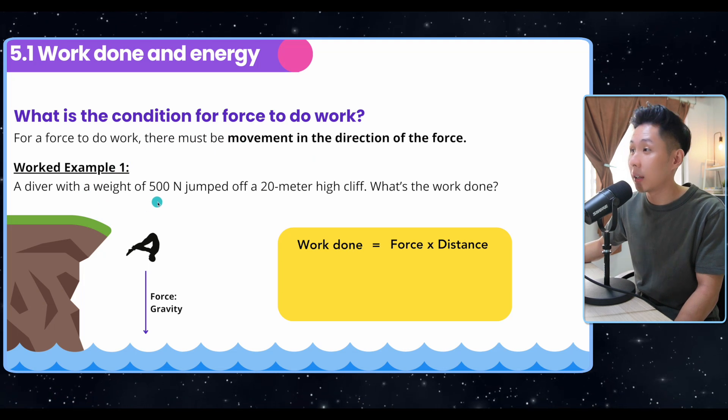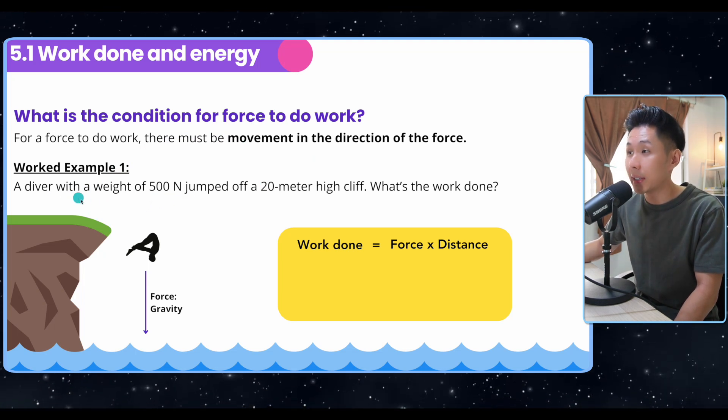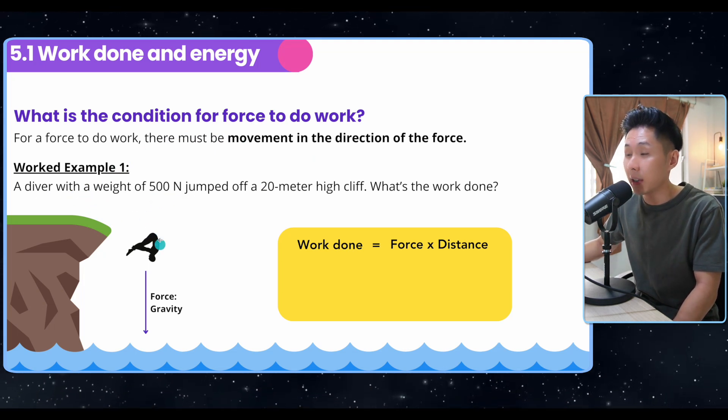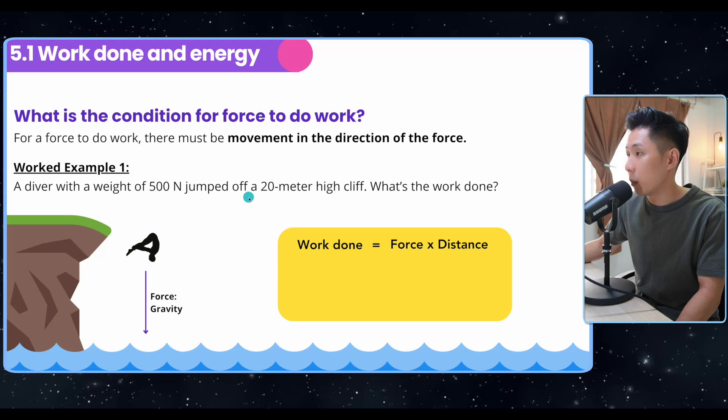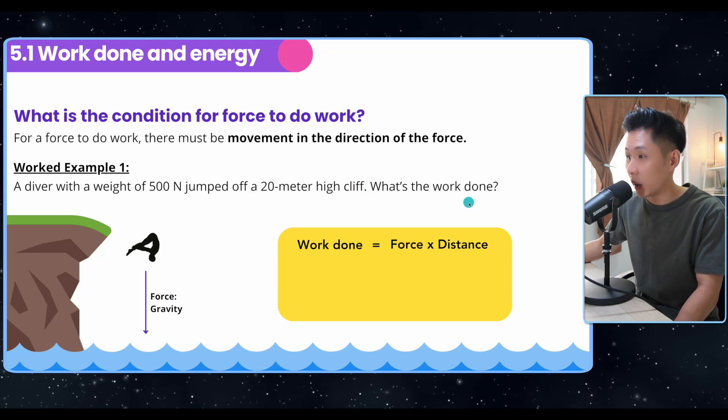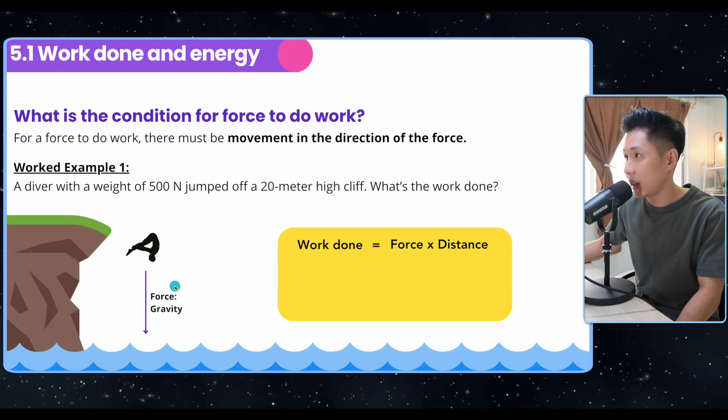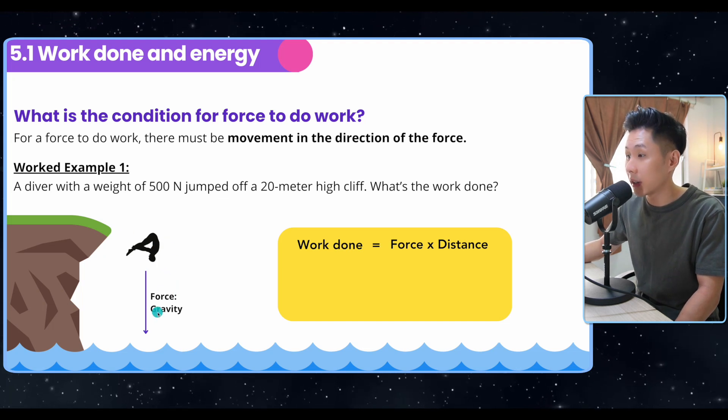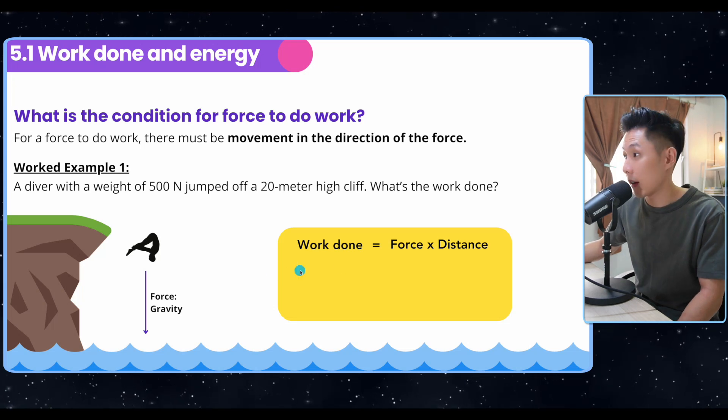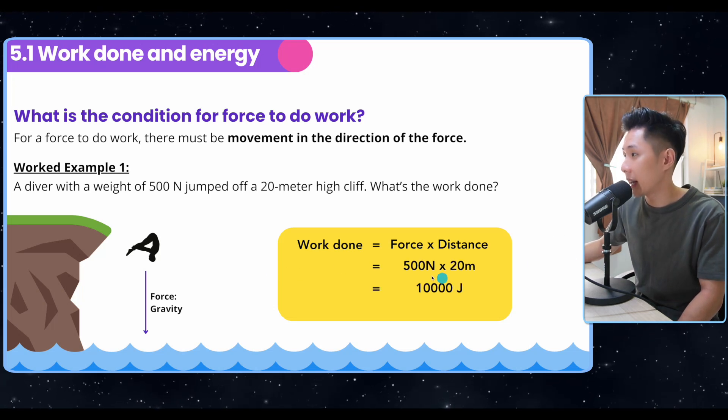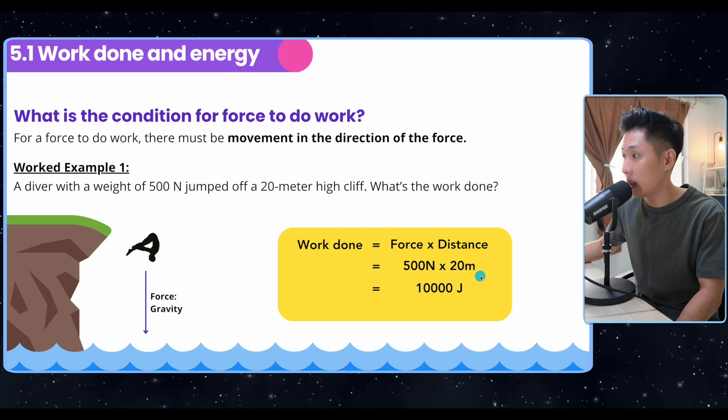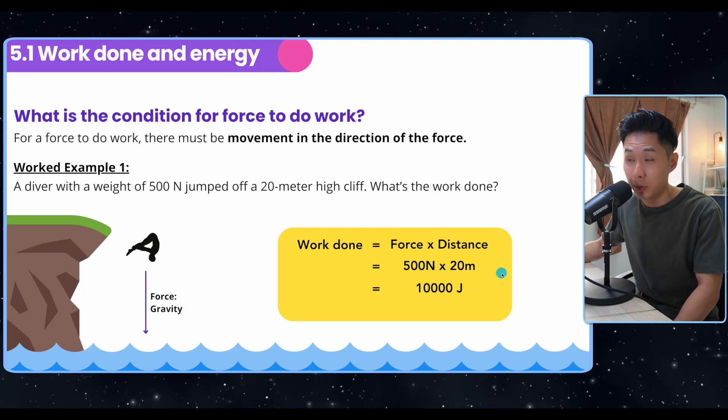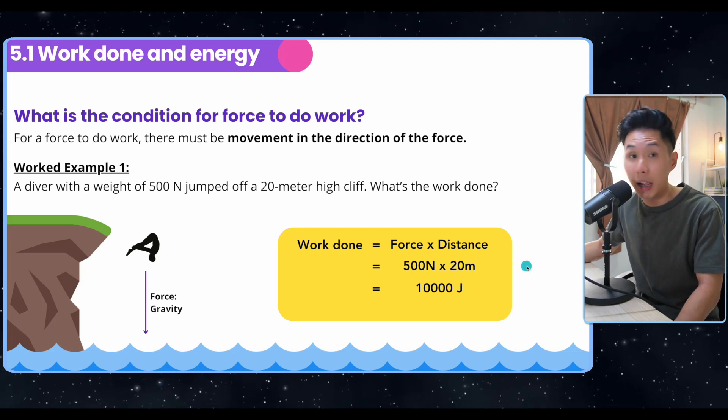Say this diver with a weight of 500 Newton—weight is the amount of gravitational force acting on this guy here by the earth—jumps off a 20 meter cliff. What's the work done? The force is gravity and he or she is also moving down the cliff. So the diver moves in the direction of the force. This is when I can use 500 Newton multiplied by 20, which will give me 10,000 joules. So that's the amount of work done by gravity.